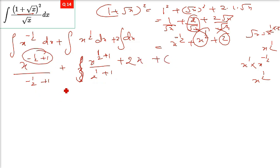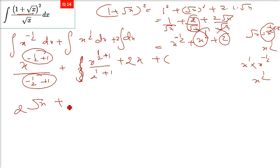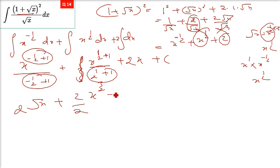Integrating each term: x raised minus half plus 1 divided by minus half plus 1 gives x raised half divided by half, so 2 root x; x raised half plus 1 is x raised 3 by 2, denominator 3 by 2 goes up as 2 by 3, so 2 by 3 times x raised 3 by 2; and integration of dx is x, with constant 2 taken out. Final answer: 2 root x plus 2 by 3 times x raised 3 by 2 plus 2x plus constant c.